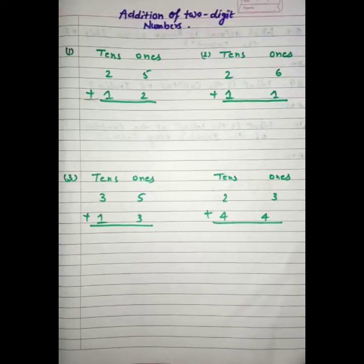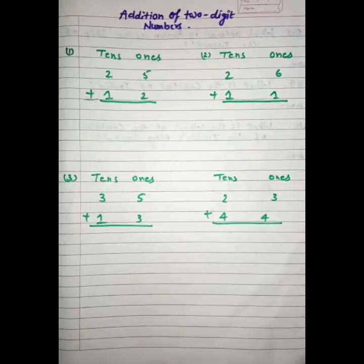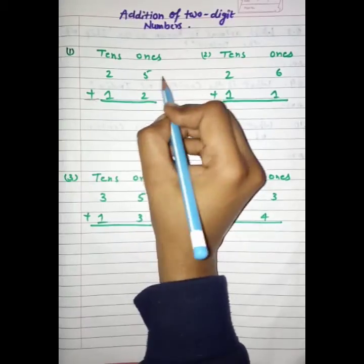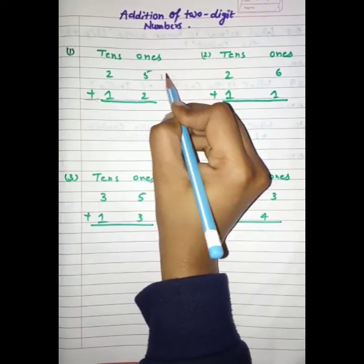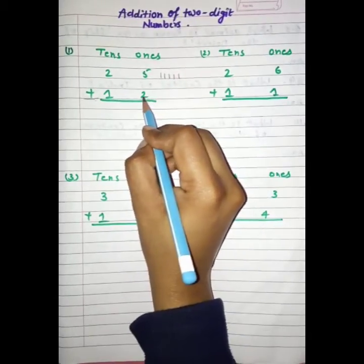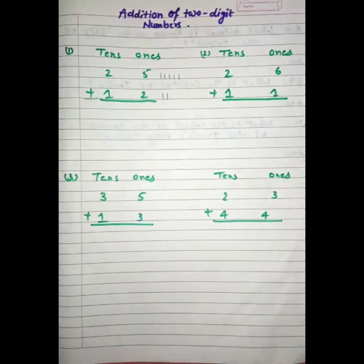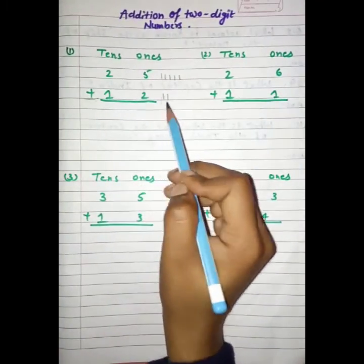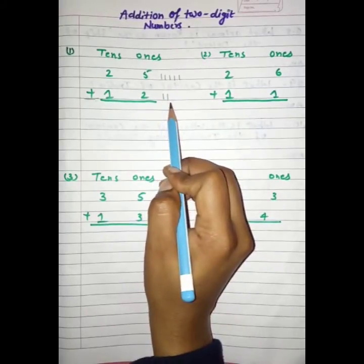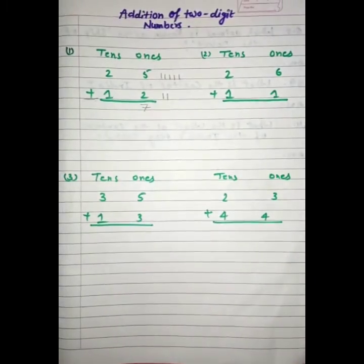Students, see the question. Yeh addition ka sign hai. Add ko hum plus bhi kaathe hain. So, students, sabse pahle hum add karen ge 5 plus 2. Hum line draw kar sakti hain. 5 ke liye 1, 2, 3, 4, 5 lines draw karen ge. And 2 ke liye 2 lines. Ab hum in lines ko count karenge: 1, 2, 3, 4, 5, 6, 7. So, students, we have 7.